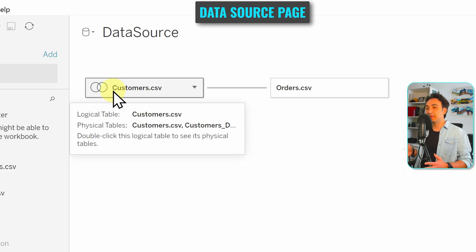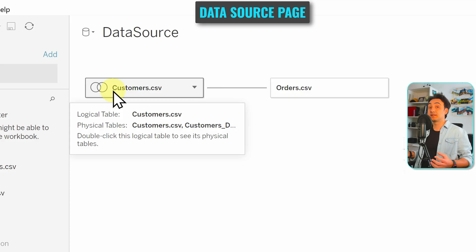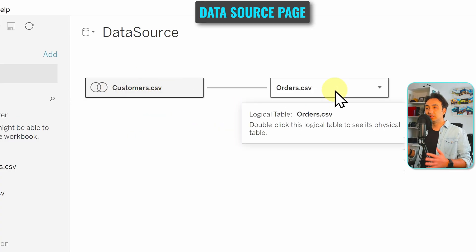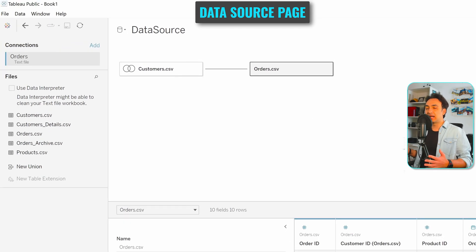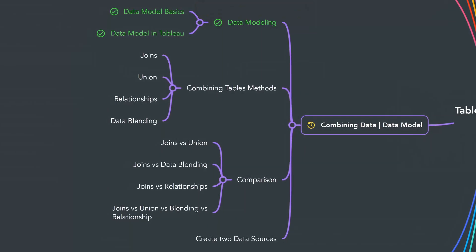To go back to the logical layer, close the physical layer by clicking that button. Now you can see that the Customers table has a new icon indicating a join in the physical layer. Hovering shows that the logical table Customers is made of two physical tables: Customers and Customer Details. If we check Orders, there are no physical tables — the data comes directly from the original table. That's how we navigate through the physical and logical layers and understand data modeling in Tableau.